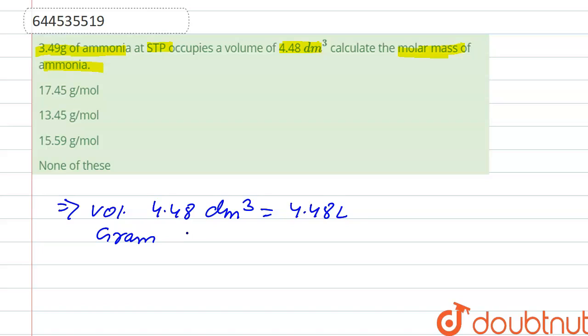So we write here gram molecular mass is equal to 22.4 liter at STP. So 4.48 liter of ammonia gas weighs 3.49 gram, given.